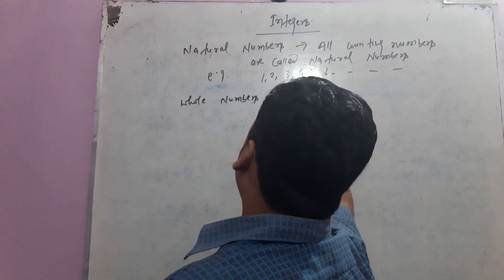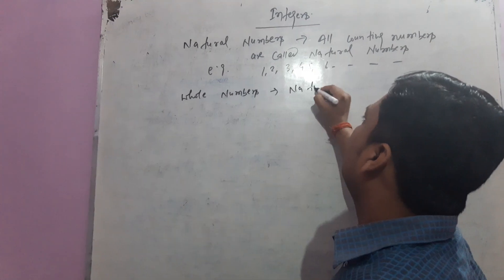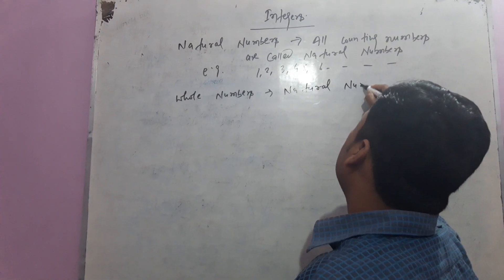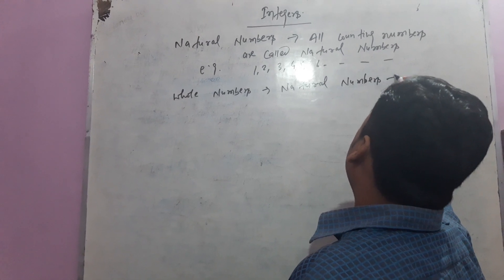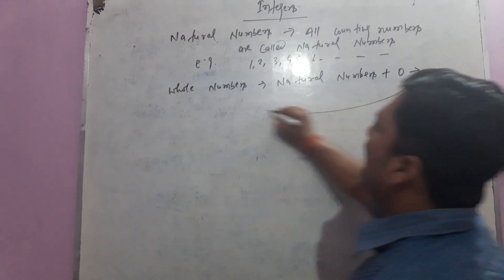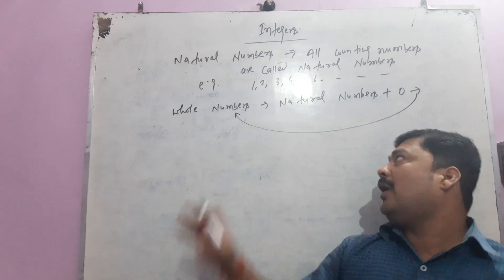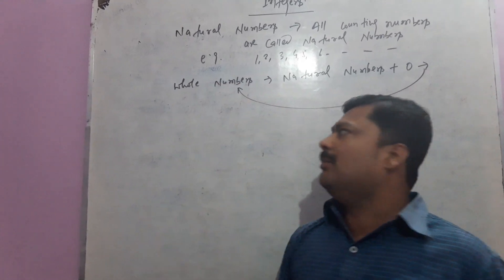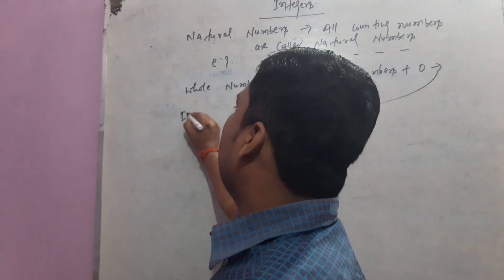The group of natural numbers including zero is called whole numbers. The group of natural numbers including zero is called whole numbers. Now the next term is integer, which is related to our chapter.